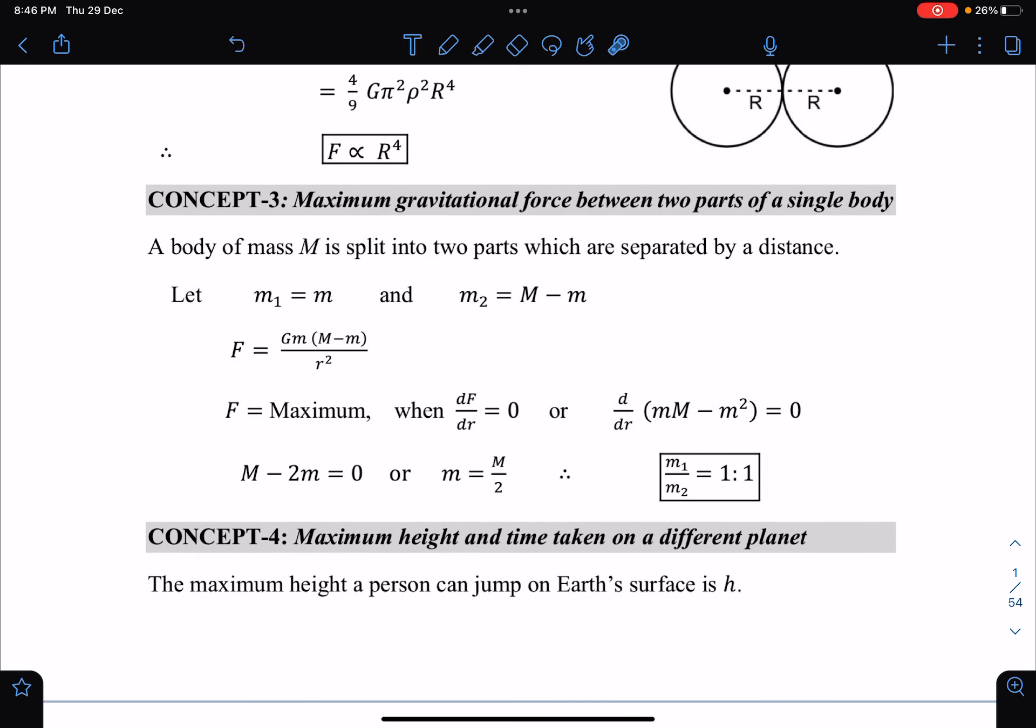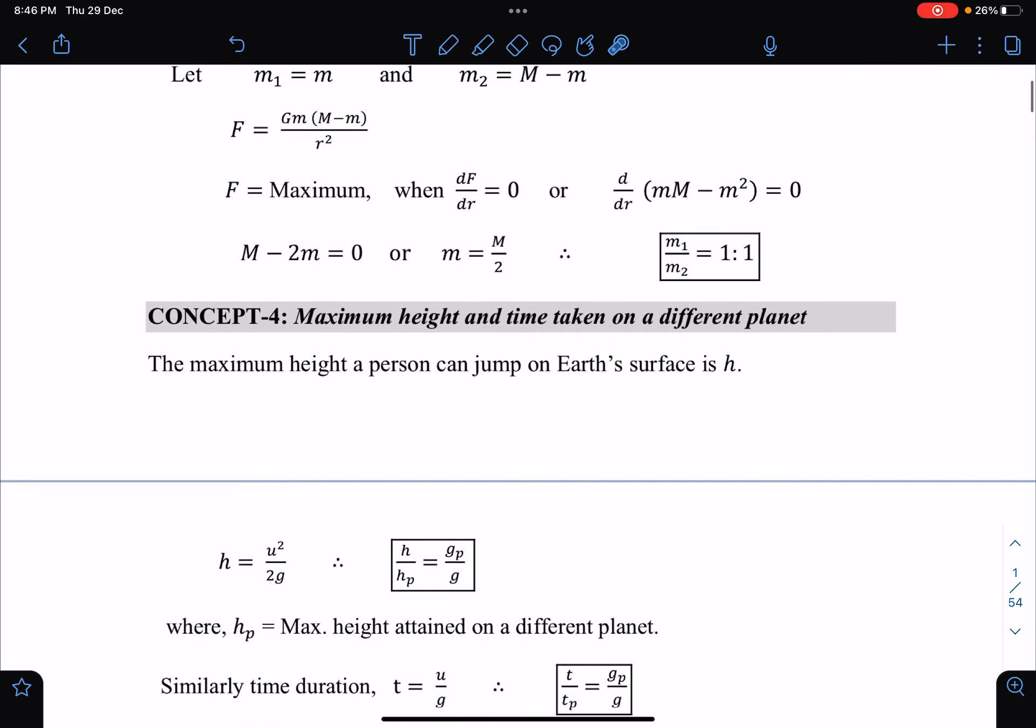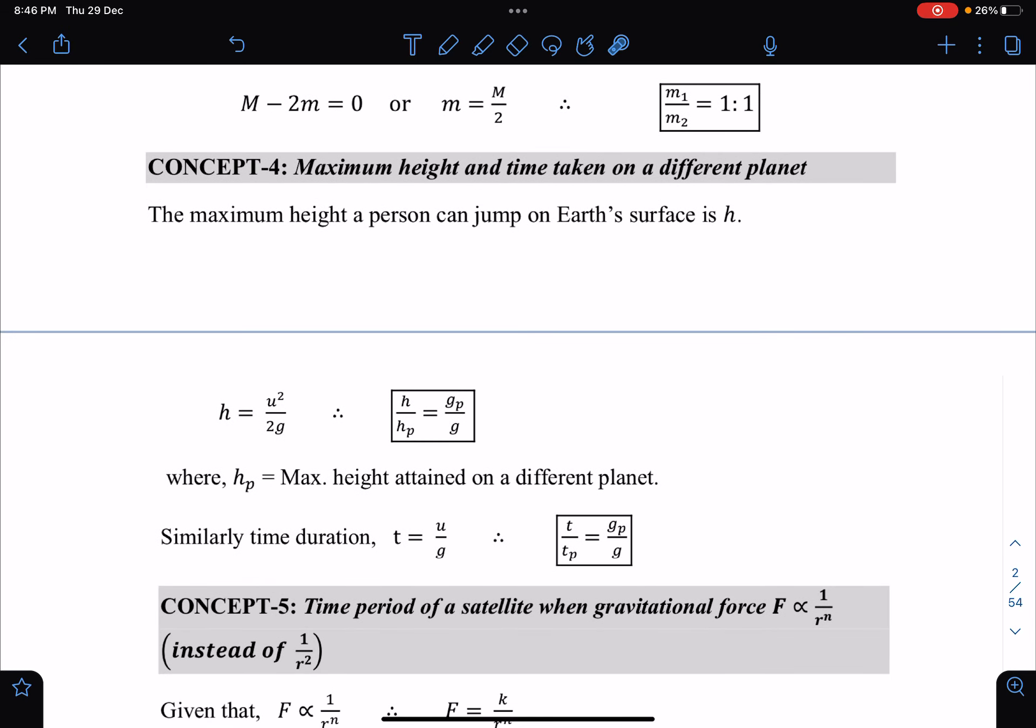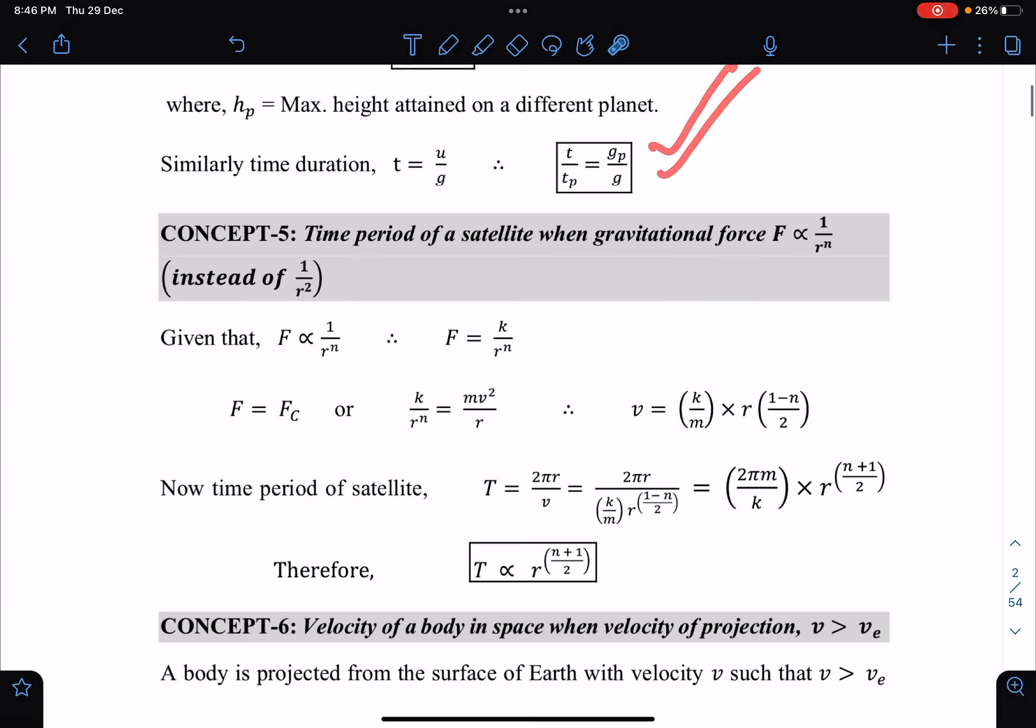Gravitational force between two parts of a single body is a very popular problem. These results on maximum height and time taken on a different planet, comparison of gravity on different planets, and time period of satellite when gravitational force is r to the power n—all these results will be very handy.